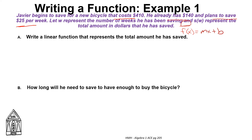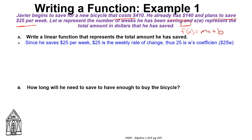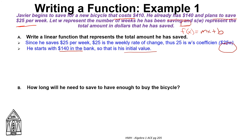First, it says write a linear function that represents the total amount he has saved. Since he saves $25 per week, that is a weekly rate of change, so we write the term as 25W — that is $25 times W, meaning $25 each week. That is our slope or rate of change. Next, he starts with $140 in the bank, so that is the initial value, which is the y-intercept, our B.